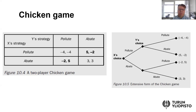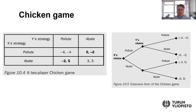Suppose that X announces it is going to pollute no matter what. Then Y ends up in the upper part of the tree structure and needs to decide: do they also pollute or do they want to abate? Country Y is comparing the second number. When country Y finds itself at the node where X has already decided to pollute, country Y needs to compare minus 4 and minus 2. It is in the self-interest of country Y to abate, because if both countries are polluting the situation is very bad. So even if country X is continuing to pollute, country Y has a self-interest to abate — to at least decrease the damages from minus 4 to minus 2.